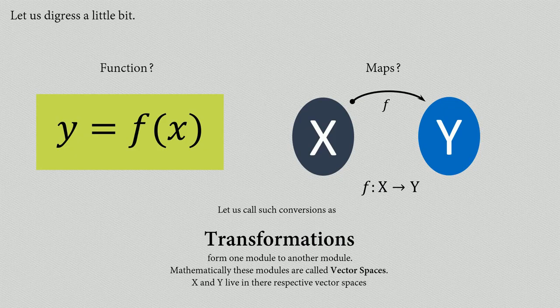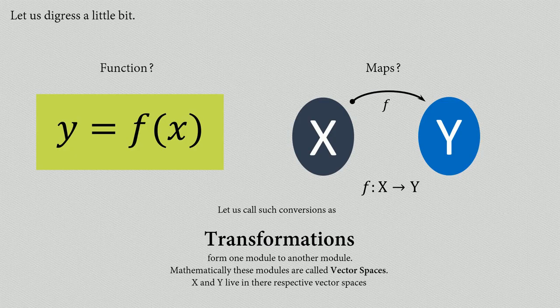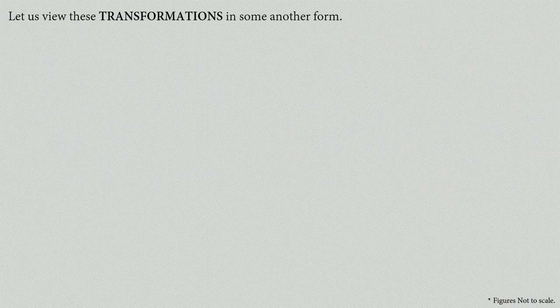You are familiar with one type of vector spaces called geometric vector spaces, and you know that those geometric vector spaces in which you plot lines and points have basis vectors like i, j, k or e1, e2, and e3. Those basis vectors represent those vector spaces.